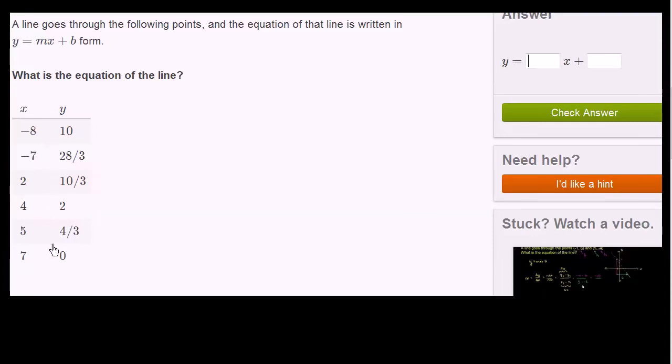They've given us more than necessary. So I'd like to pick the two points that make things a little bit simpler. So I'll pick the point 4, 2, and 7, 0. I just picked those two points because they have nice, clean numbers associated with it.